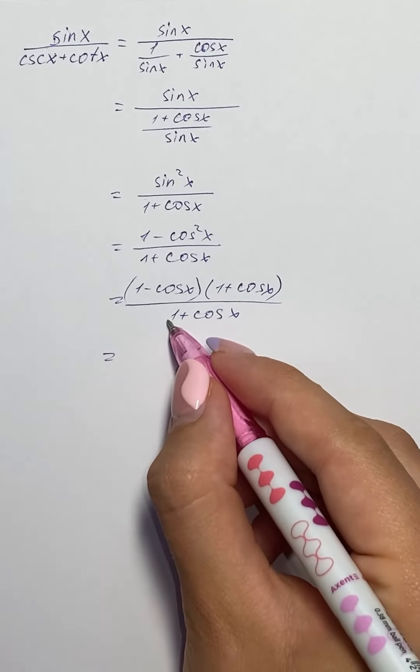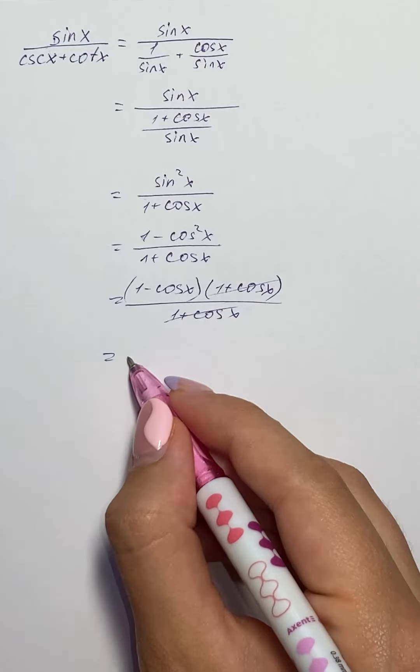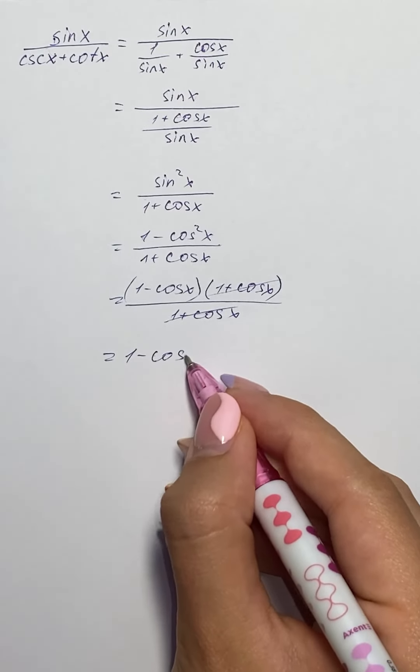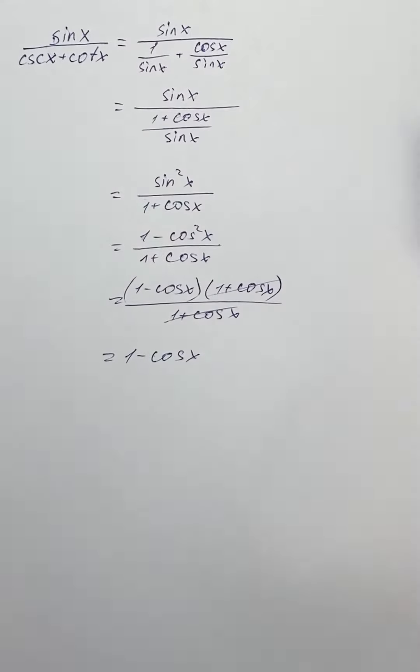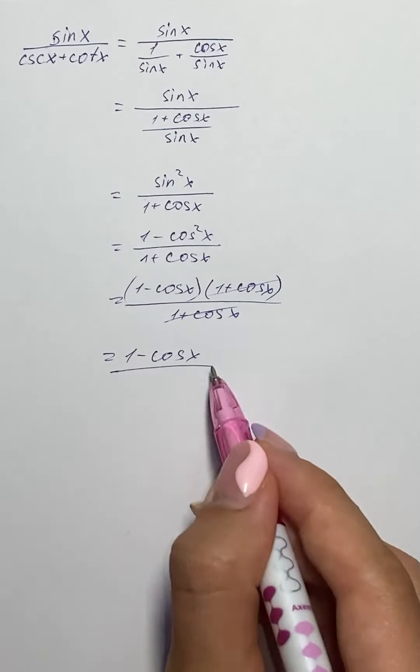And we can reduce 1 plus cosine of x and get 1 minus cosine of x. So the given trigonometry expression can be simplified as 1 minus cosine of x.